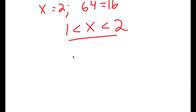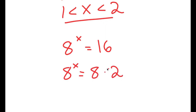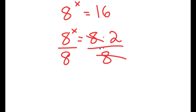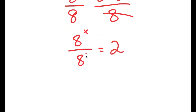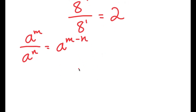Now, how do we find the exact value of x? I can rewrite 16 as 8 times 2. Then I divide both sides by 8. These cancel out, and I get 8 to the power of x over 8 is equal to 2. Using the property that a to the power of m over a to the power of n equals a to the power of m minus n, so 8 to the power of x over 8 to the power of 1 equals 8 to the power of x minus 1, which equals 2.